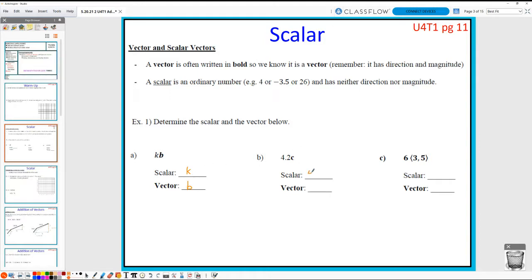In this case, if the scalar is this value K, whatever K may be, while the vector is the vector B. Here we have a scalar value of 4.2, and our vector is vector C, whatever that is. I believe this is a mistake. I don't believe that's supposed to be part of it. The scalar should just be 6. The vector is <3, 5>. This is our components, not necessarily a specific vector.